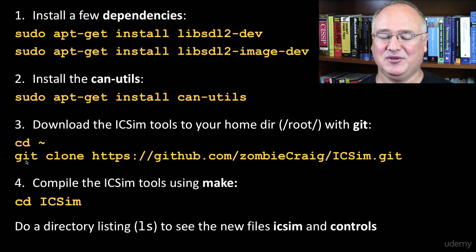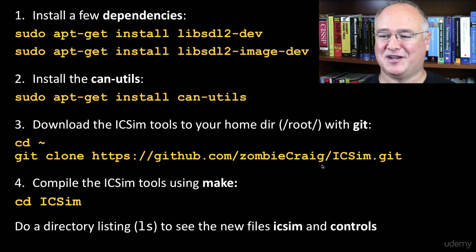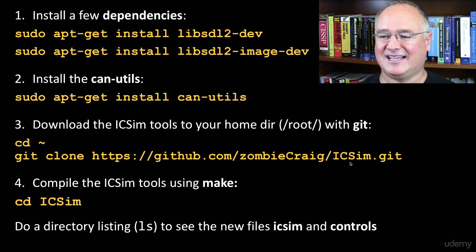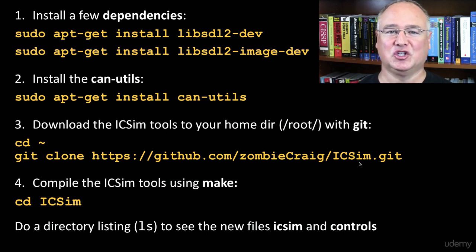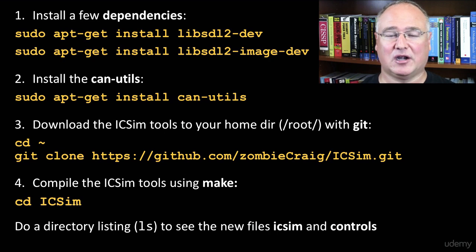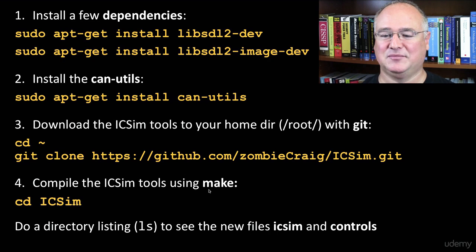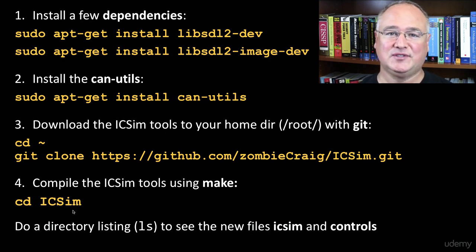Then we used GitHub for the first time - we used git to grab some really cool open source software from zombie craig, that's Craig Smith and the team at opengarages.org. The IC simulator, or instrument cluster simulator, gives us a controller and a dashboard simulator to let us drive a virtual car to practice car hacking safely. We didn't have to compile the icsim tools using make - we just could cd in and use the dot controls and dot icsim folders and programs already in there.